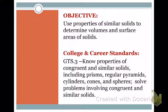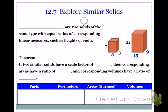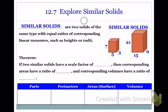Today we're going to talk about similar solids. We talked about similar shapes before, and we're going to use the idea of similar solids to help us find volumes and surface areas. Similar solids are two solids of the same type with equal ratios of corresponding linear measures, such as heights or radii.